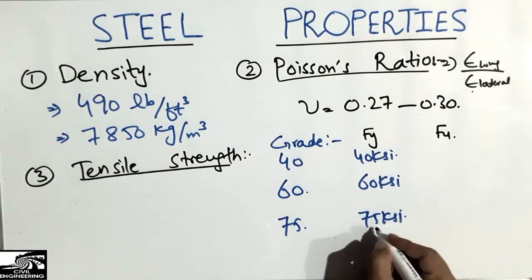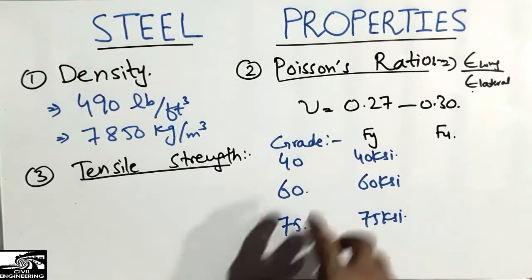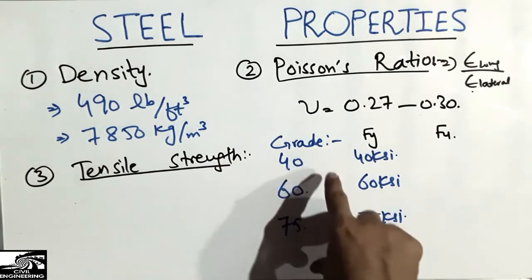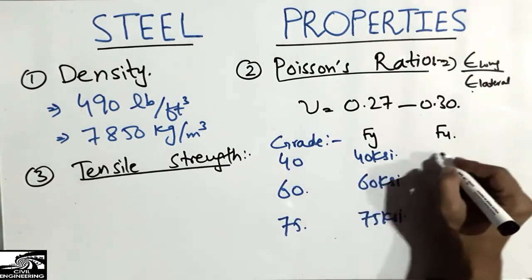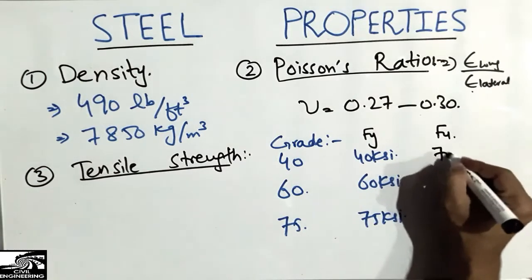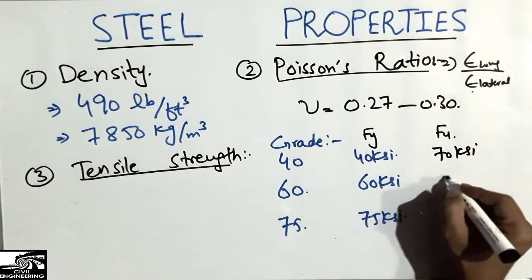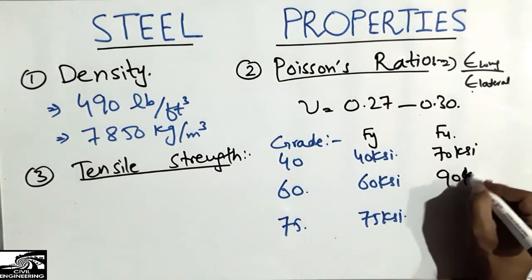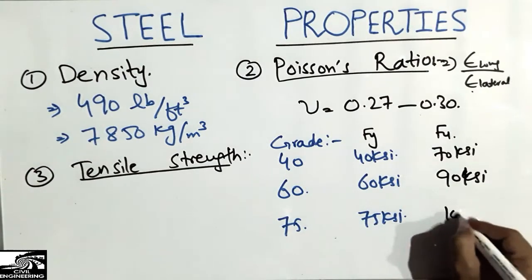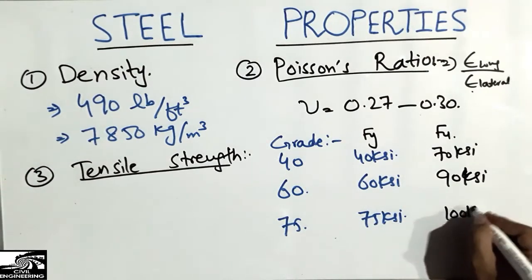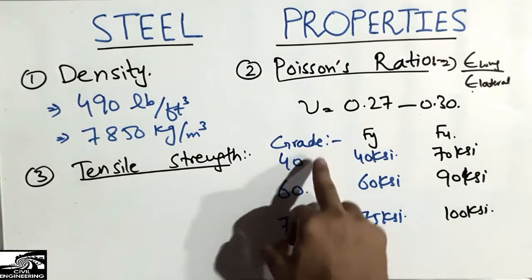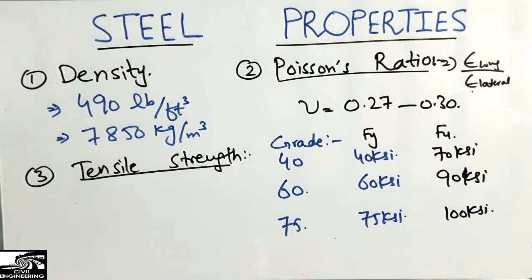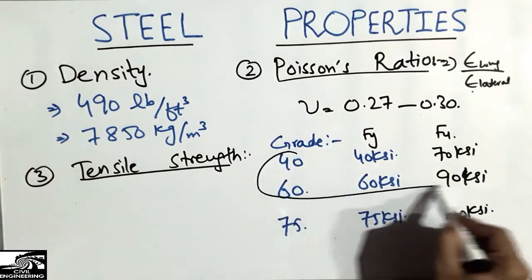These are the yield strengths of the three different grades. The ultimate strengths are different: Grade 40 has an ultimate strength of 70 KSI, Grade 60 has 90 KSI, and Grade 75 has approximately 100 KSI. Grade 40 and Grade 60 are the most commonly used; Grade 75 is very rarely used in general practice.